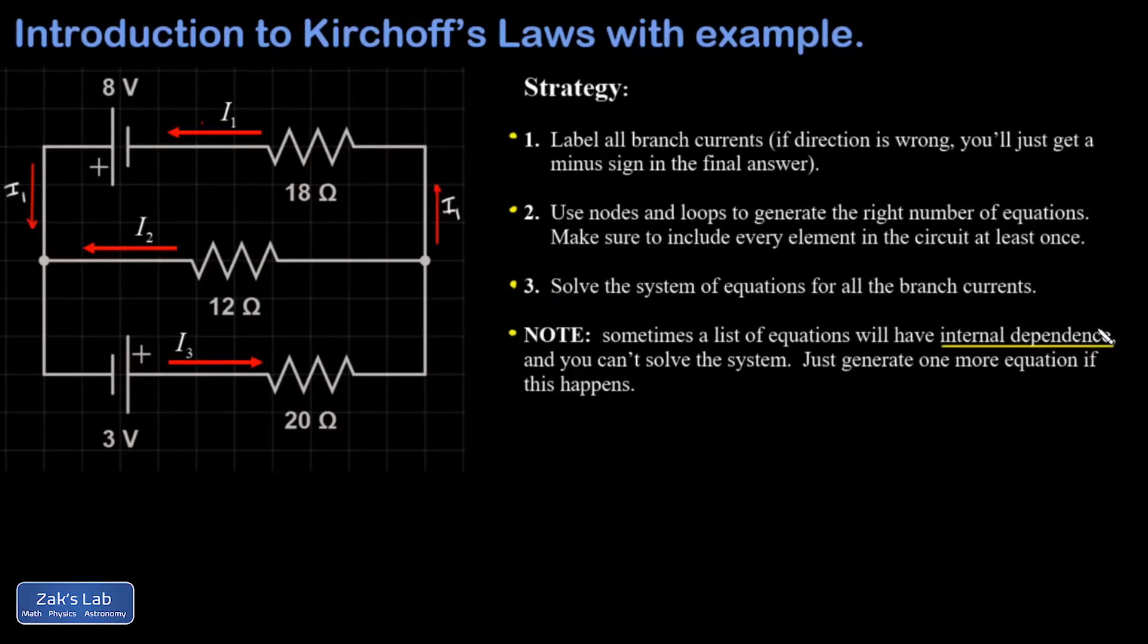And basically, that means like if you had six unknowns and six equations, but you had some internal dependence, that wouldn't be enough equations. And you would have to add one more equation in order to nail down the actual values of the currents. You'll notice that you end up with a free parameter in the solutions if this happens. And then you just have to write down an equation for another voltage loop, for example, and then reevaluate the system, and it should nail it down.